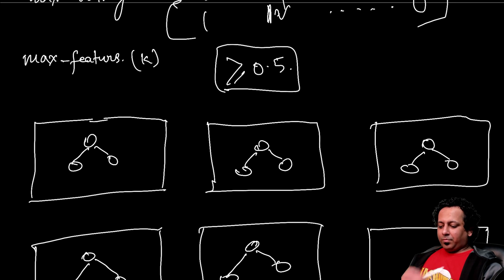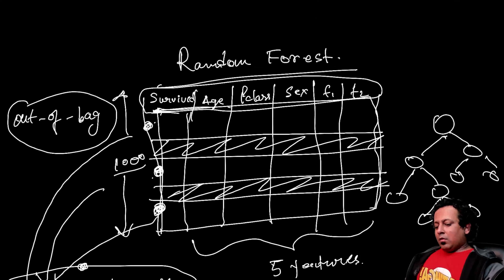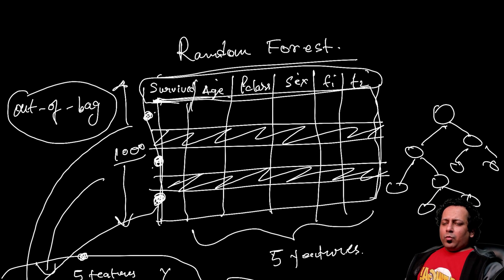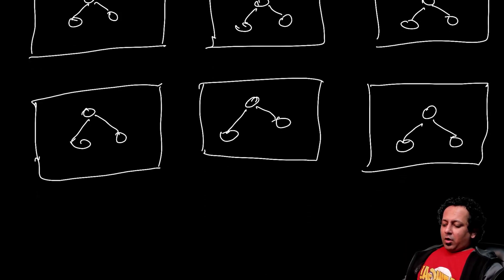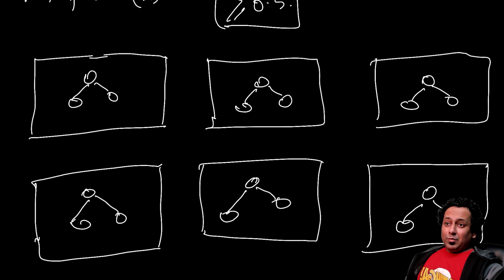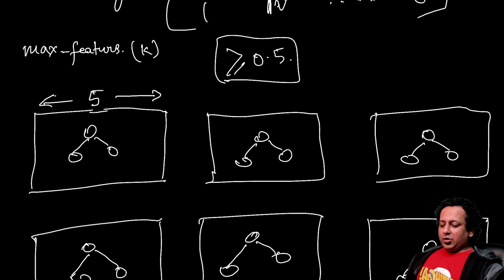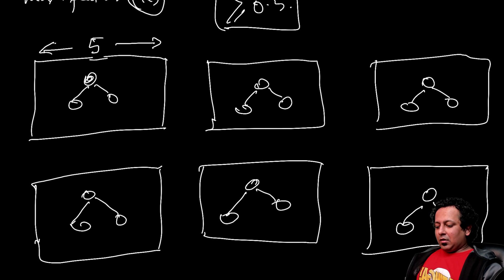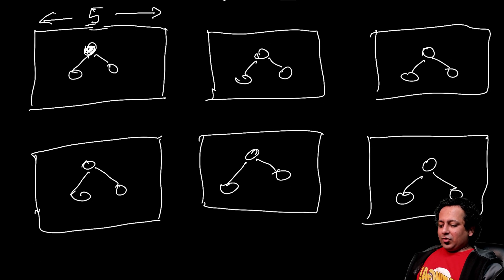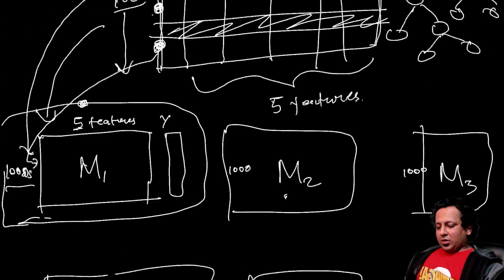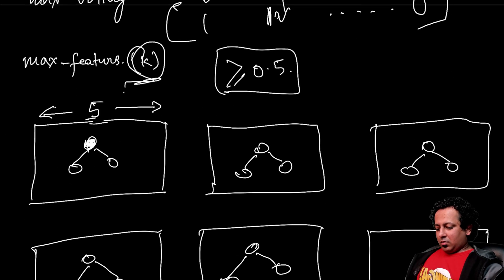Say I have five features. To build a regular decision tree, I'd evaluate all five to find the root node. But in random forest, for each subsampled dataset you choose only k features randomly to create the root node. For example, I might choose k=3: age, p-class, and sex, and start the root node with sex.